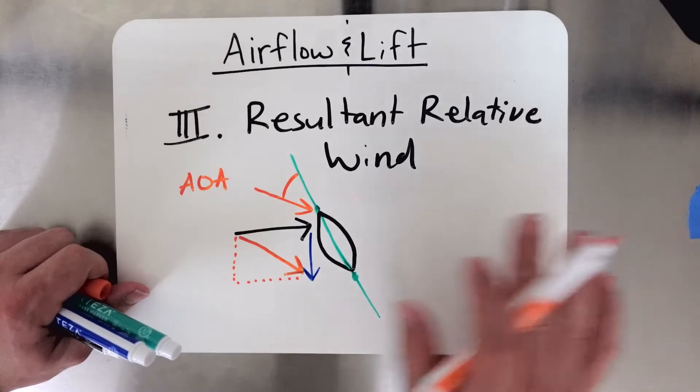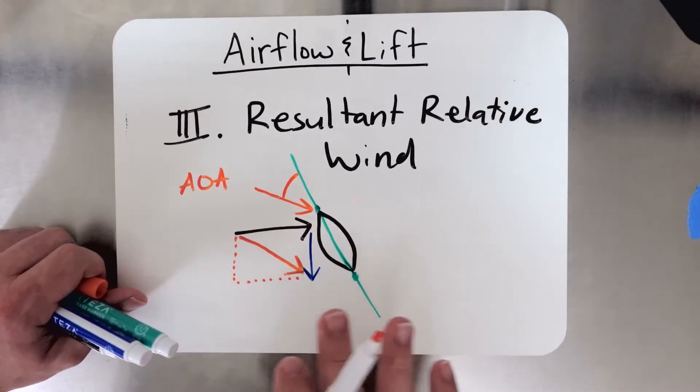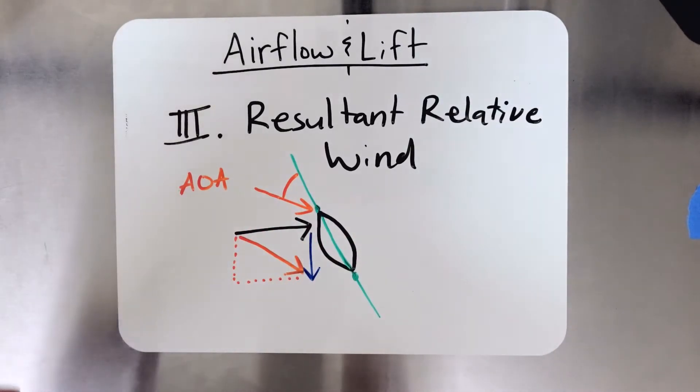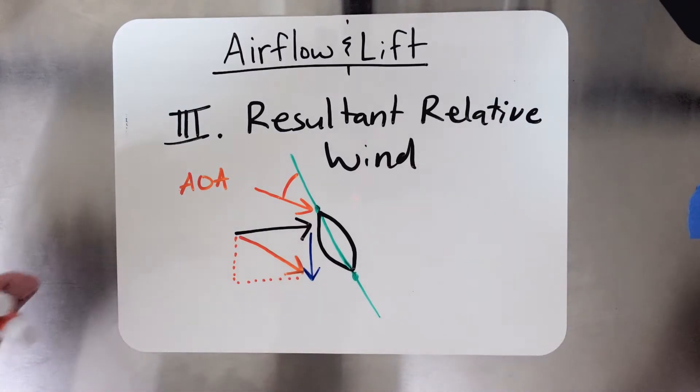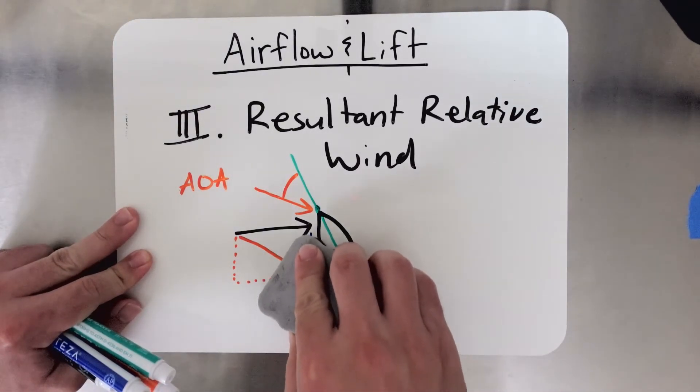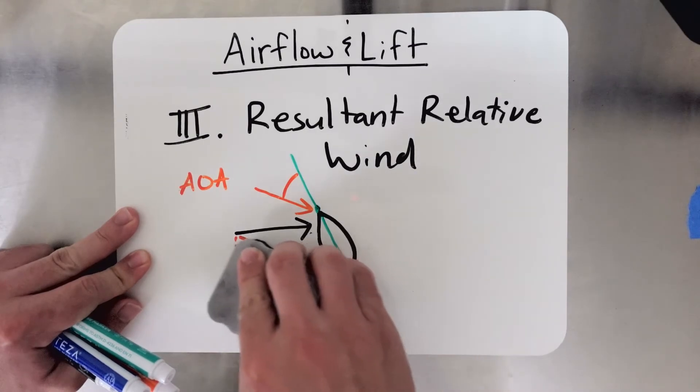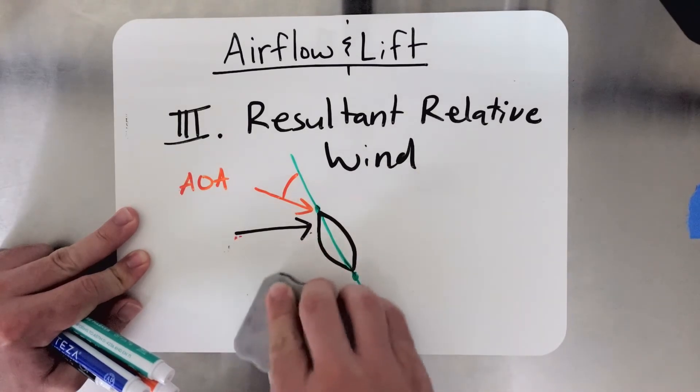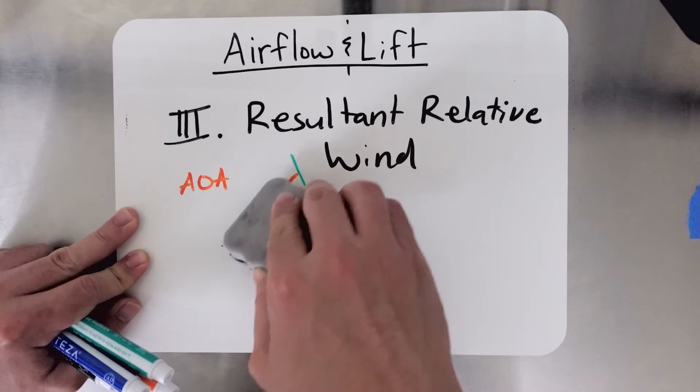Now, let's take a look at what happens as we sort of manipulate these vectors, right? So let's erase our blue induced flow line, and let's erase our orange resultant relative wind.